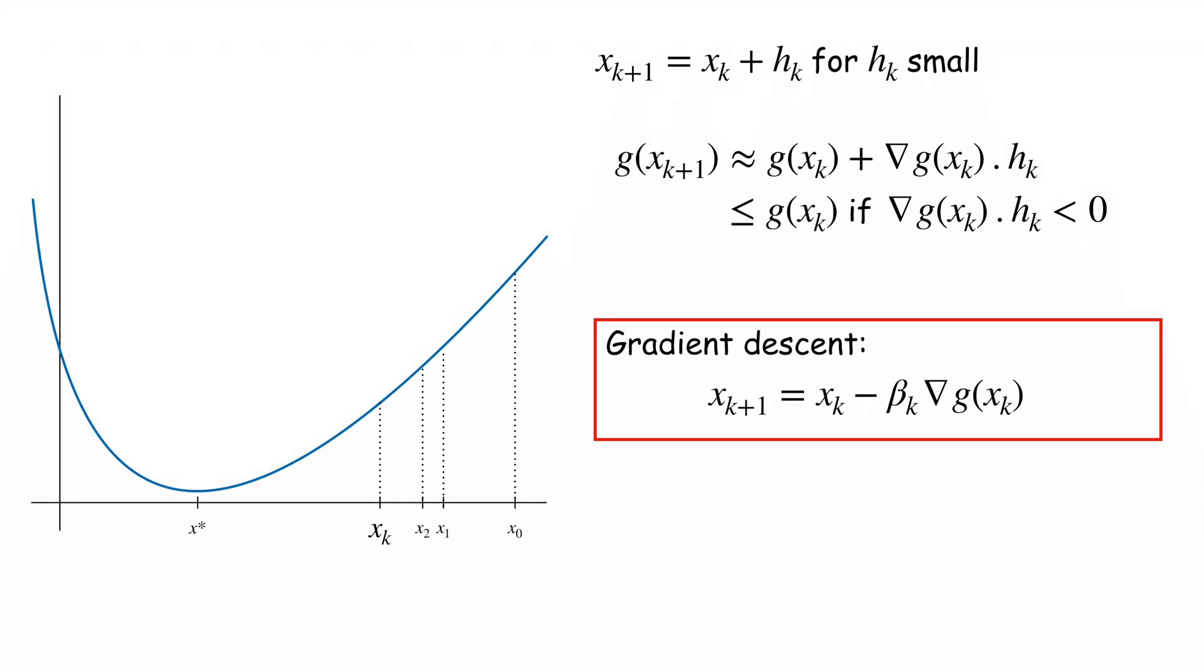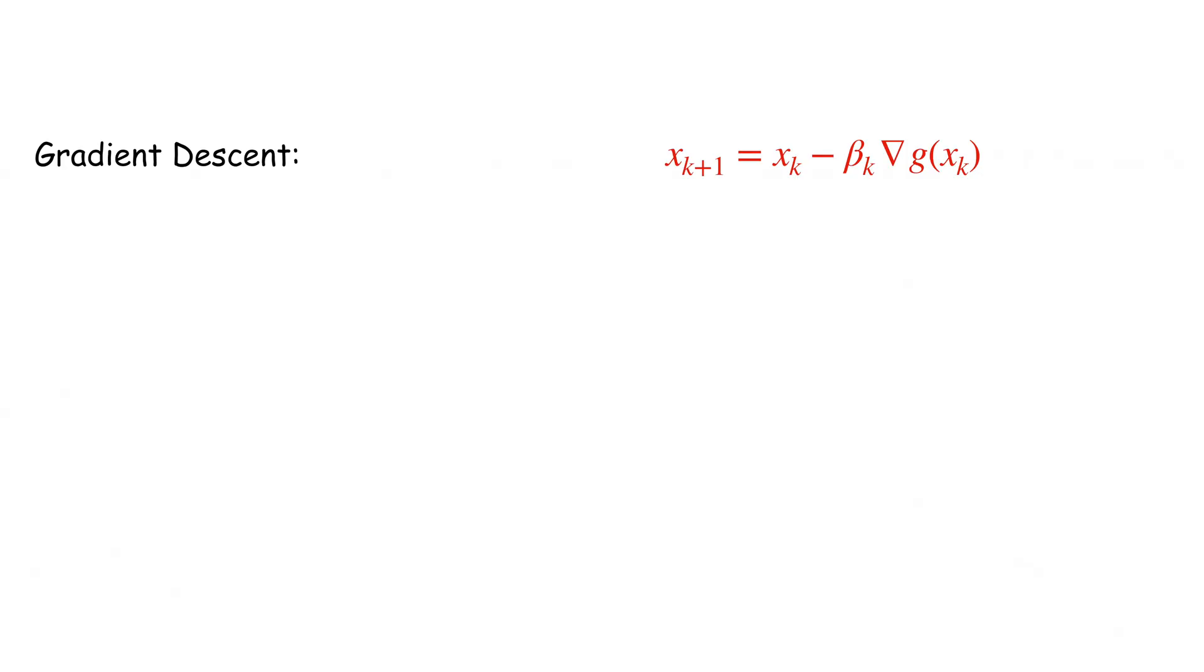On the other hand, if β_K is too large, then x_{K+1} is not close to x_K anymore and the approximation formula on the right is no longer valid. Intuitively, you may miss x*. Now in our problem, x must be in a convex set C of vectors whose entries are non-negative. In this case, we want to minimize G of x over all x in C, and at each step K, the output of our algorithm x_K must be in C.